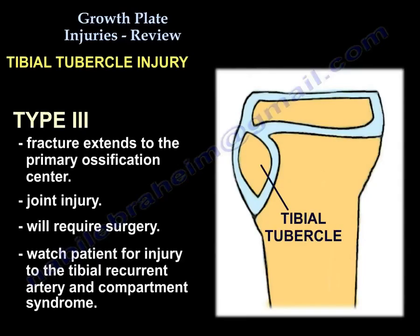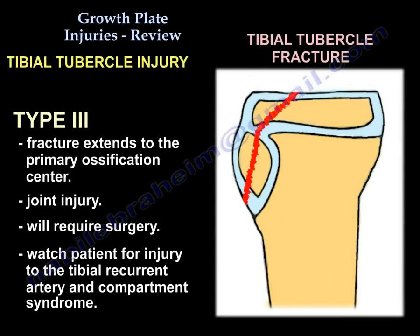Tibial tubercle fracture has several types, but type 3 extends into the proximal tibial growth plate. Tibial tubercle injury may cause compartment syndrome due to injury of the anterior tibial recurrent artery. When this fracture is displaced, it usually involves the joint and likely needs surgical reduction and fixation.